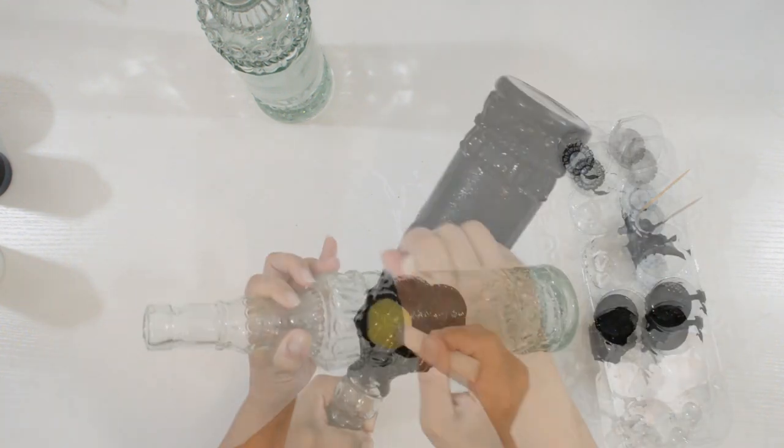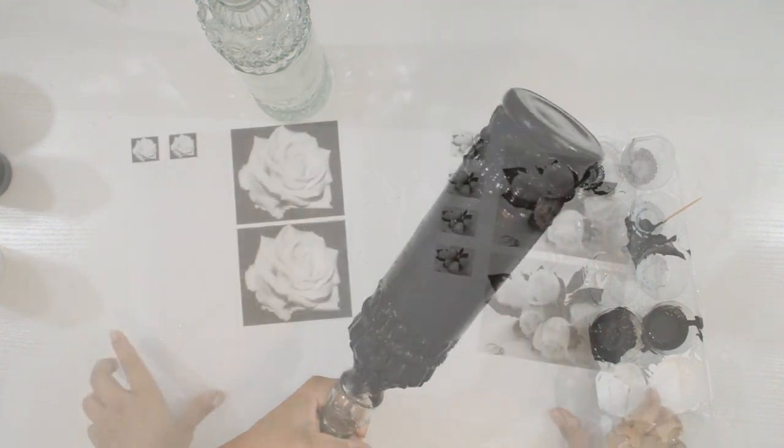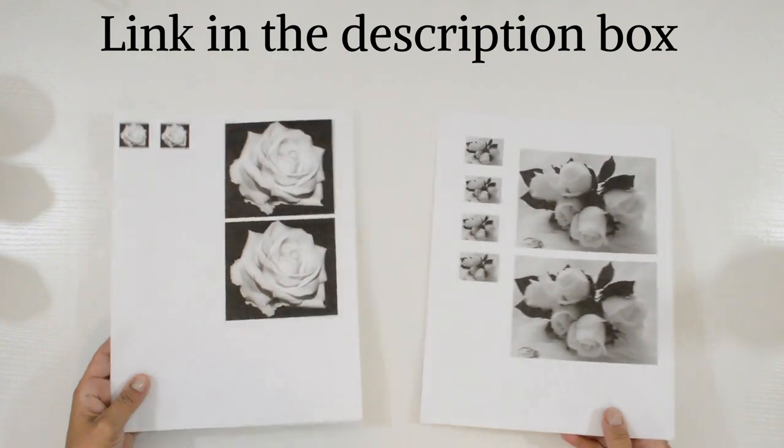To start, I'll be giving both bottles two coats of black, letting them dry between each one. While they dry, I'll be preparing the roses.